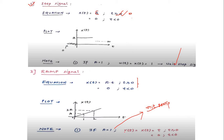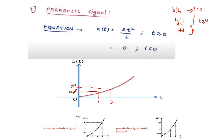The ramp signal is denoted R(t). Next is the parabolic signal, with functional representation x(t) = At²/2. For t=0, x(t)=0; for t=1, x(t)=A/2; for t=2, x(t)=2A. The amplitude exists for t ≥ 0, and is 0 for negative t. The standard notation is P(t), and if A=1 it is the unit parabolic signal.